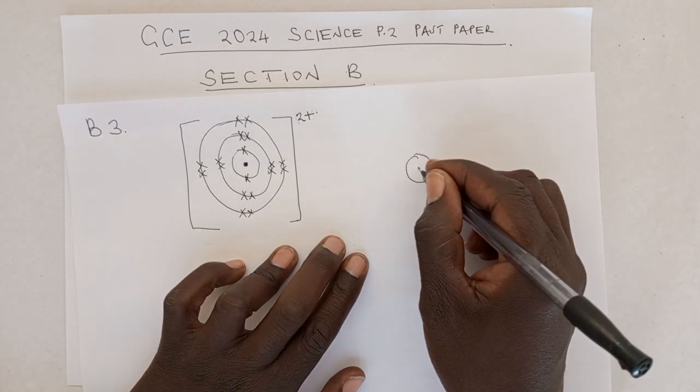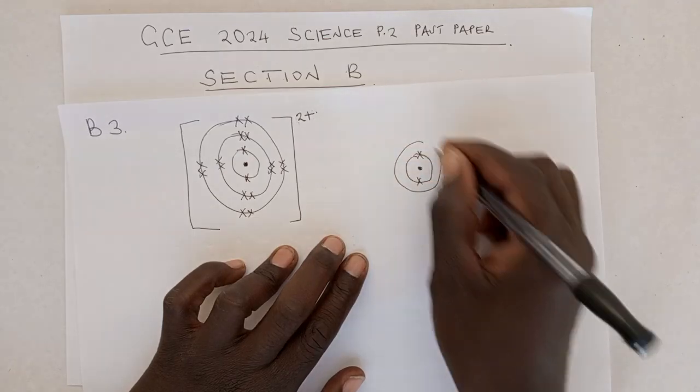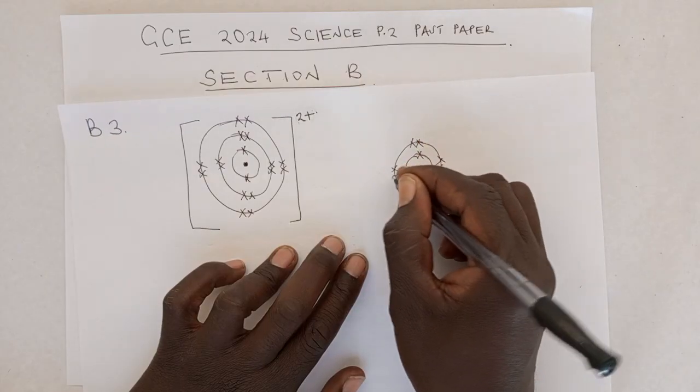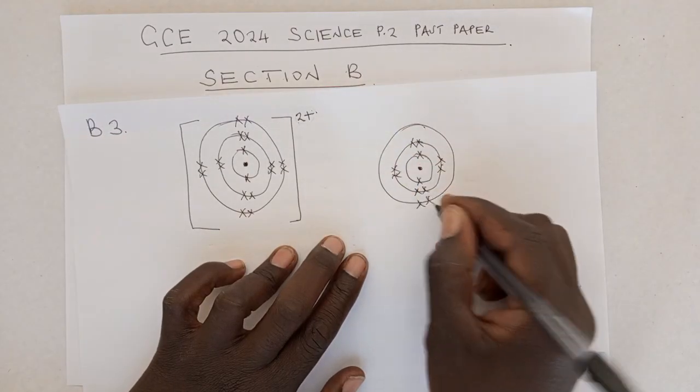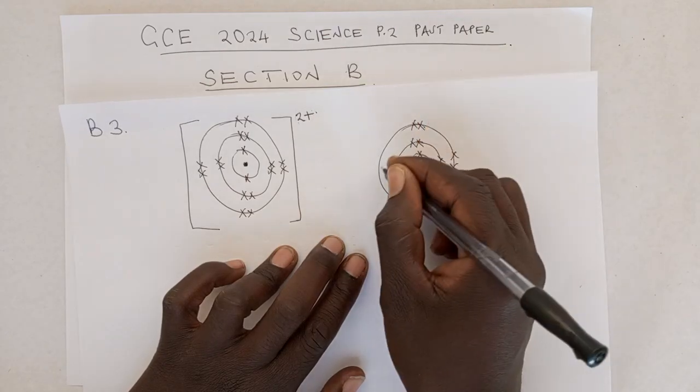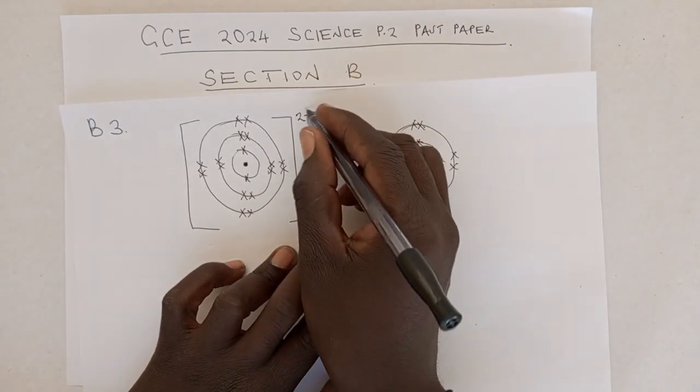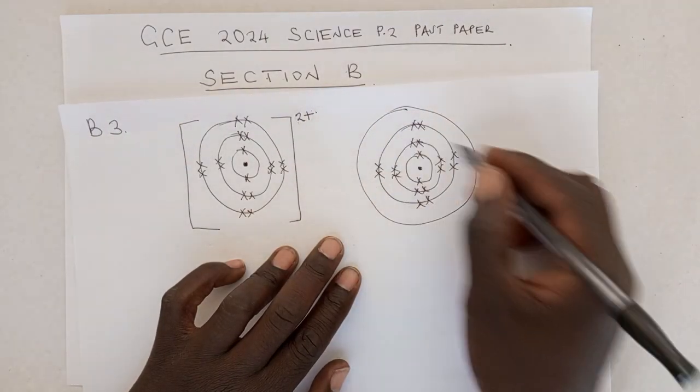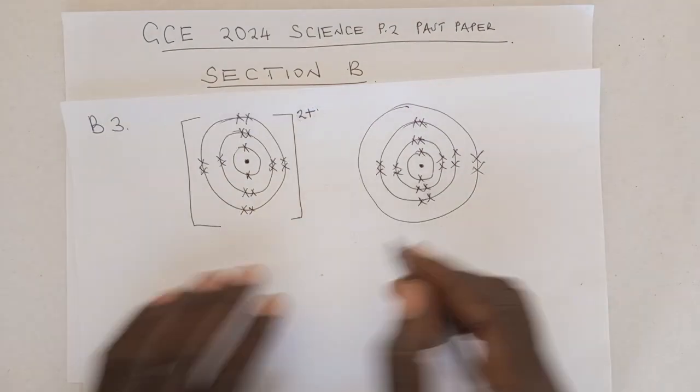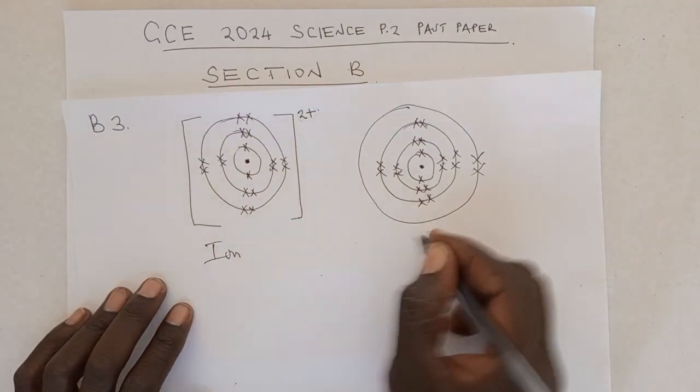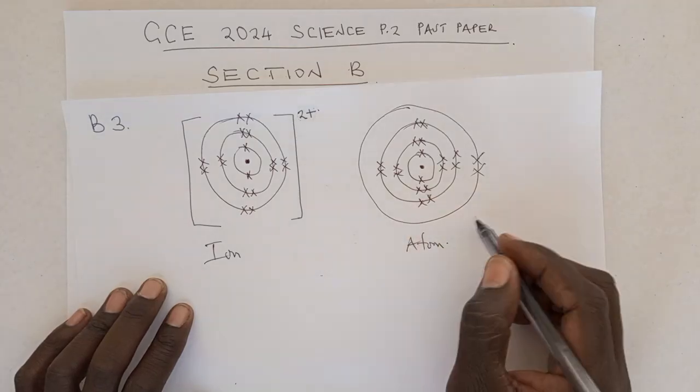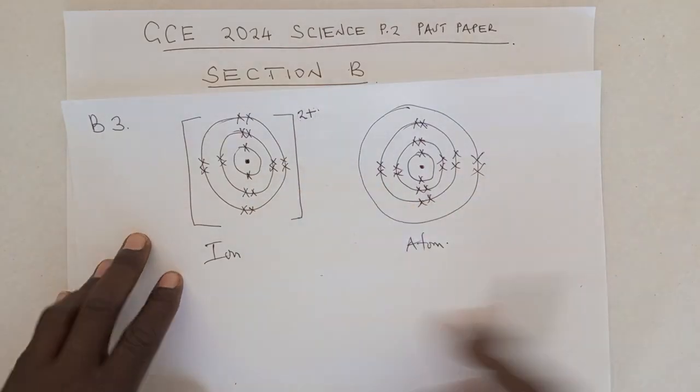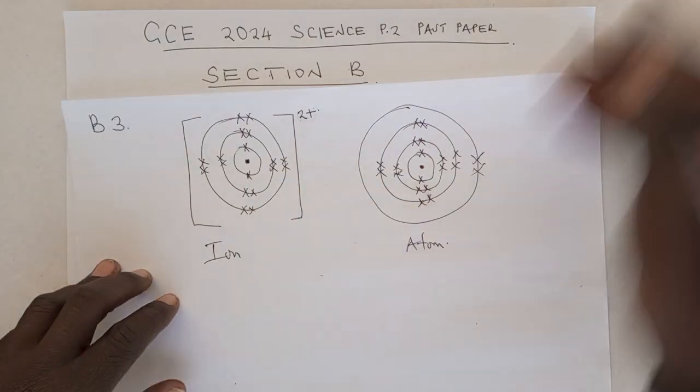So we need to draw its atomic structure. We know that the first shell will have 2 electrons. The second shell will have 8 electrons. The third shell will have 8 electrons. This time around, where these 2 electrons came from. That will be the fourth shell. And we have these electrons. So this is an ion. This is an atom. At this point, it has no overall charge. It is neutral. But this time around, it has an overall charge of 2+.